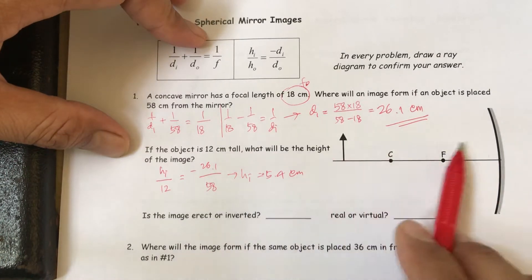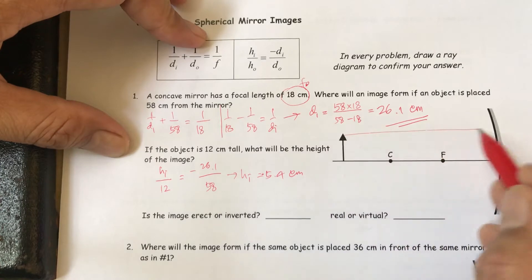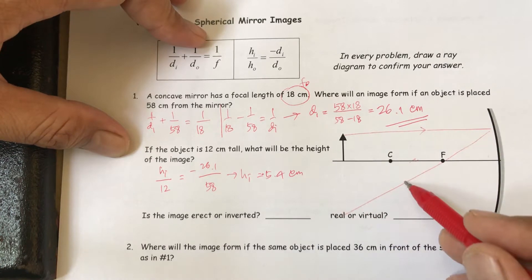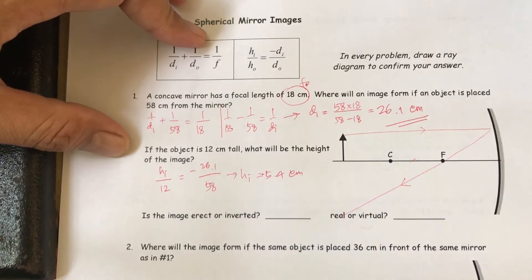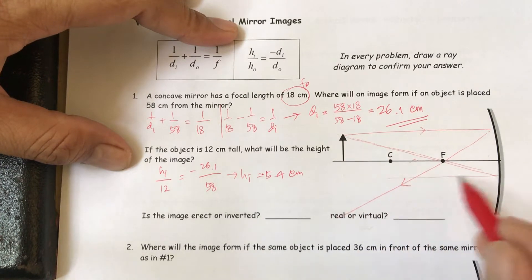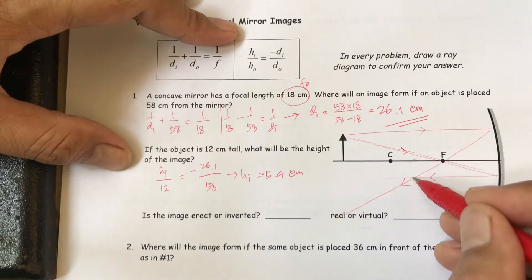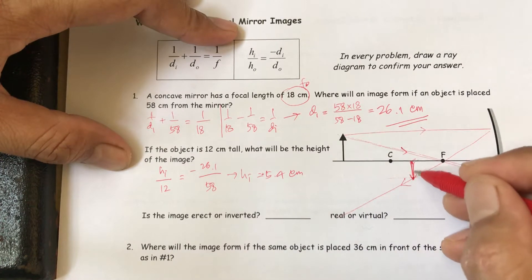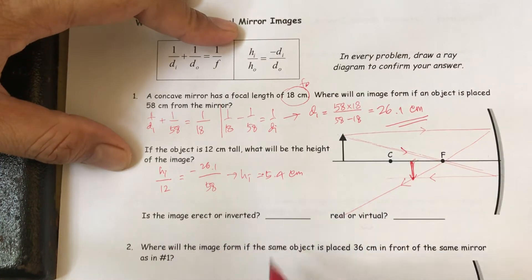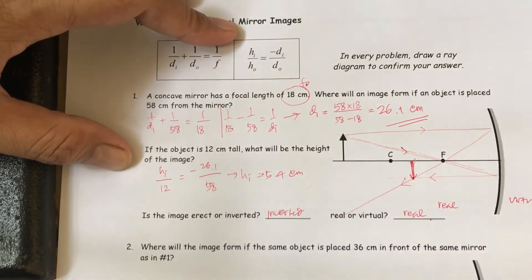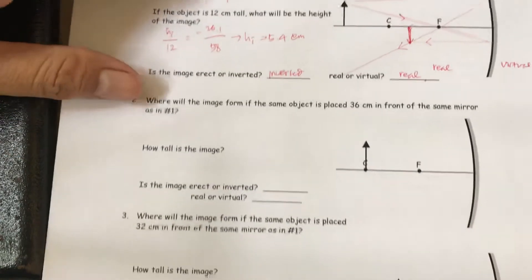We draw the ray diagram: a ray parallel to the principal axis reflects through the focal length, and we get the intersection of the lines — that is the image. The image is inverted and real. So we have answered number one.